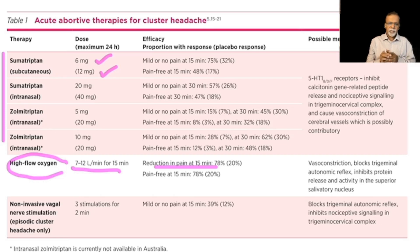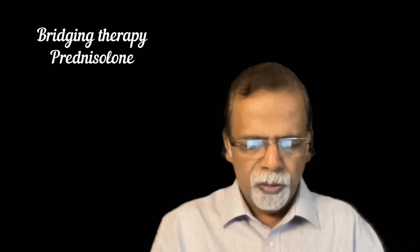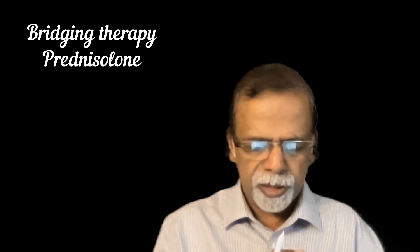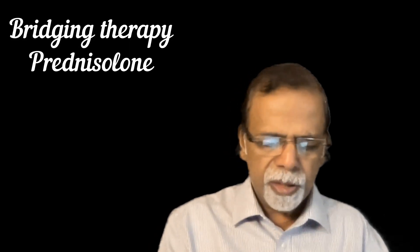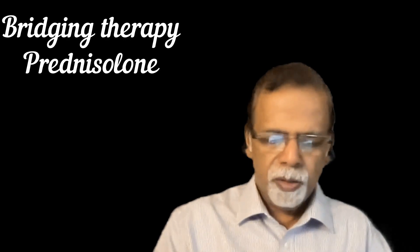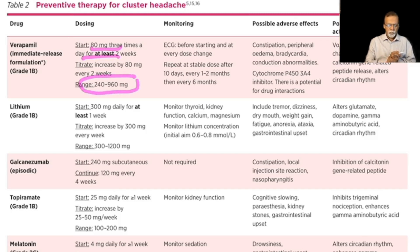In episodes not responding to medications, bridging therapy is used alongside abortive treatment. The drug typically given is prednisolone, 1 mg per kilogram body weight, with a maximum of 75 mg per day. For preventive therapy, verapamil is the well-accepted option, starting at 80 mg three times a day (240 mg total), and can be increased up to 960 mg over four weeks. An ECG should be taken before starting verapamil and may need to be repeated.